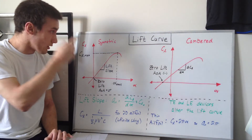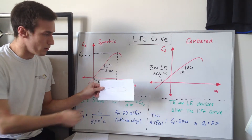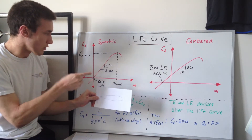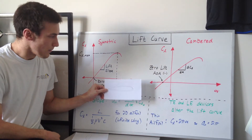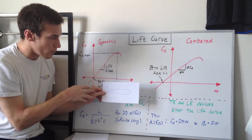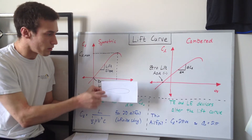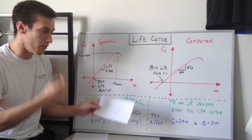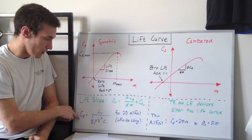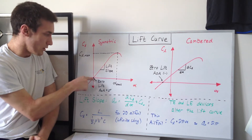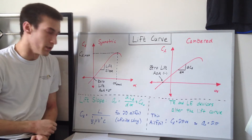Let's start with the symmetric airfoil. First we'll look at when it's at zero angle of attack — pretty horizontal. At zero angle of attack, the air moves over the wing and the pressure distribution on the top and bottom are equal, so there's no net lift on this airfoil. If the lift is zero, the lift coefficient is zero. So for zero angle of attack, the lift coefficient is zero, and we can put a point right at the origin of this graph.